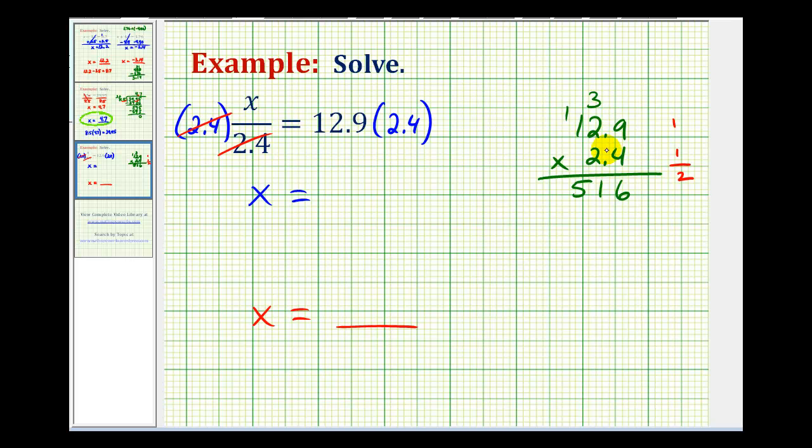Now we'll multiply by 2. 2 times 9 is 18. We're going to put the 8 in the second column from the right, though. So this will be 8, and now we carry a 1. 2 times 2 plus 1, that's 5. And 2 times 1 is 2.